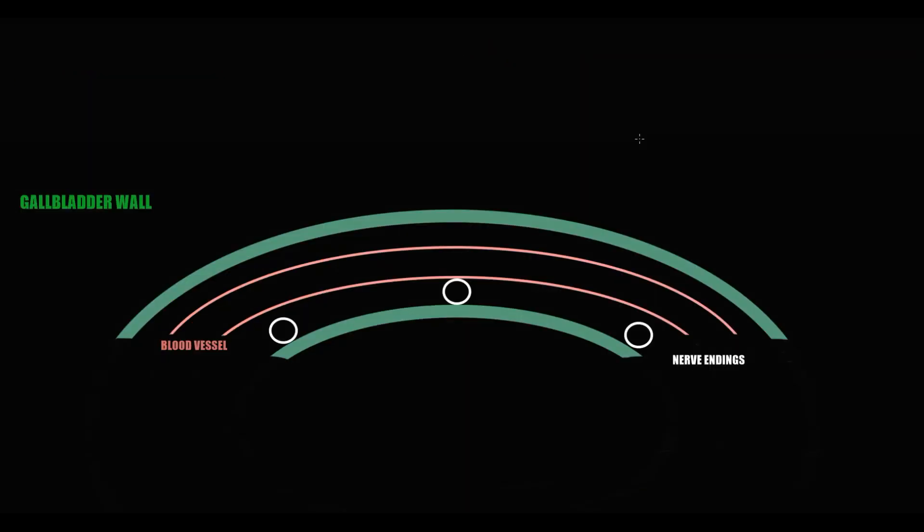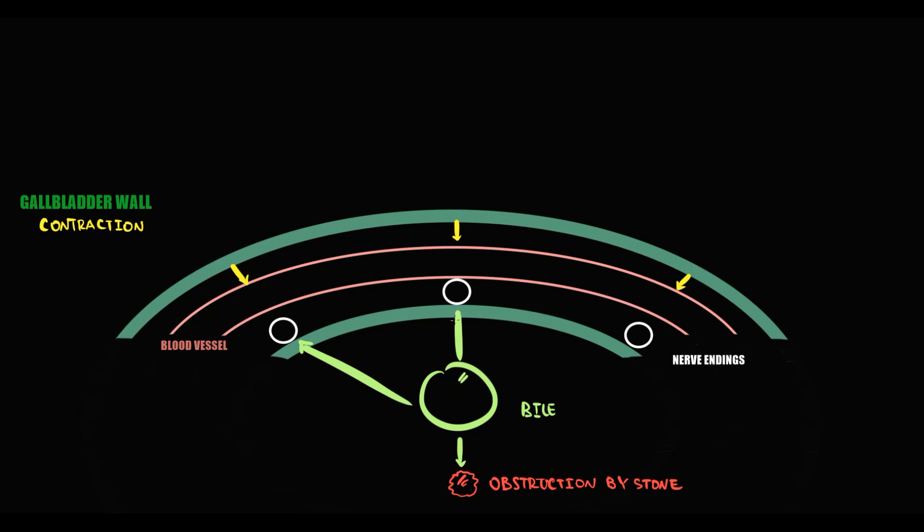To explain this, here we have a gallbladder. Inside the gallbladder we have intramural blood vessels that deliver blood to the cells in the gallbladder wall, and also gallbladder wall has nerve endings. When stone causes obstruction the flow of bile out of the gallbladder becomes disrupted. When gallbladder contracts we have outer force of contraction that acts on gallbladder wall, and fluid that remains causes pressure from the inside. As a result gallbladder wall becomes compressed.